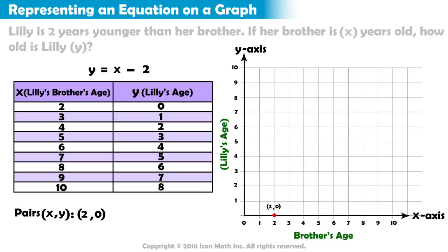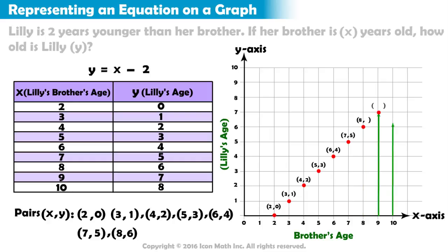The next ordered pair is three, one. Again, we start at the origin and move three places to the right and one place up. We continue to plot the points from the table until all points are graphed.